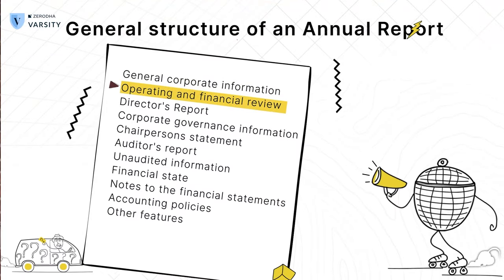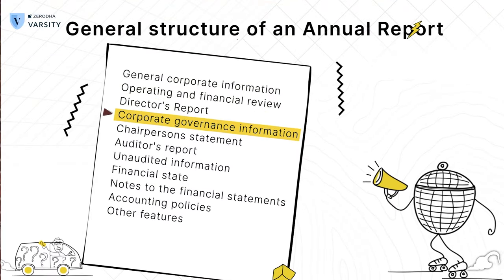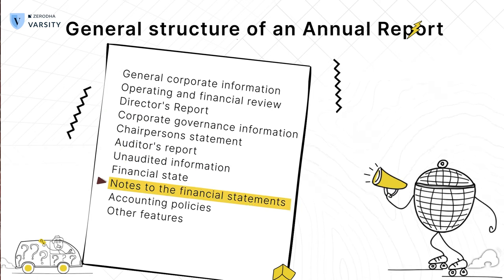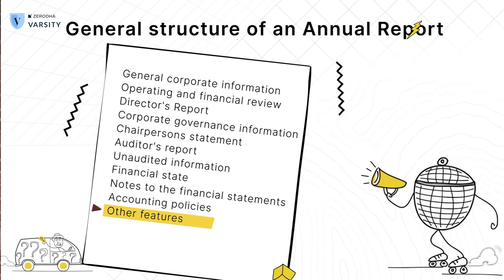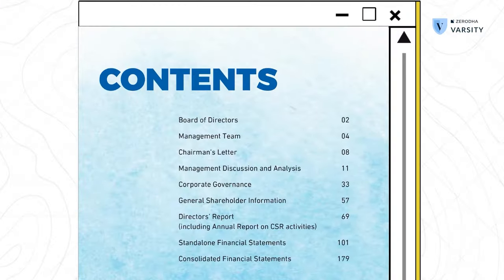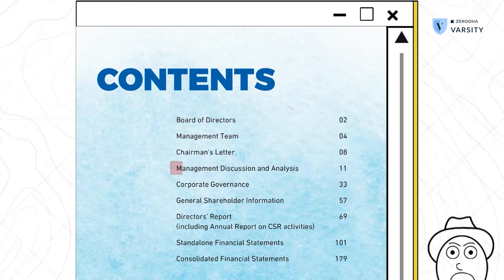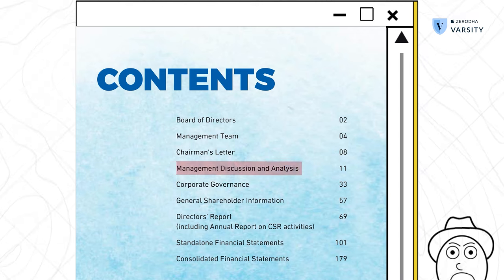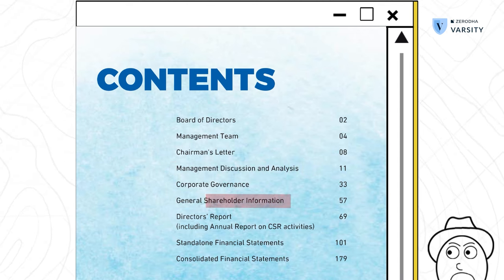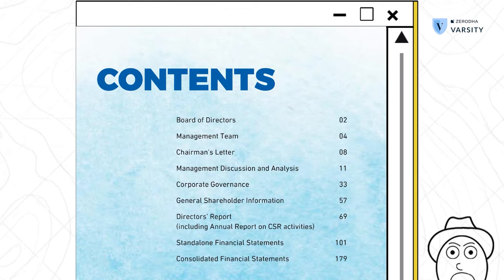Most annual reports follow a similar structure, especially for companies that have been around for a while. As you can see, these are the contents of the annual report. From this report, the main things I would look at are the Management Discussion and Analysis, the shareholder information, and the consolidated financial statements.